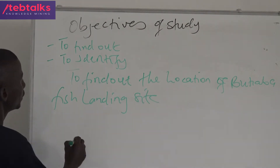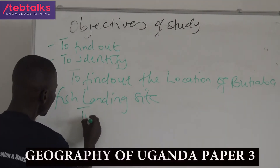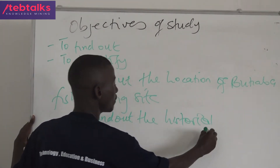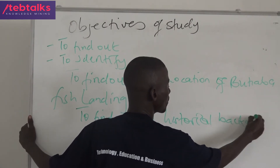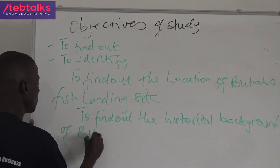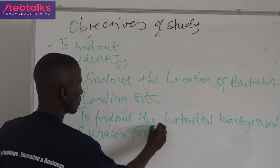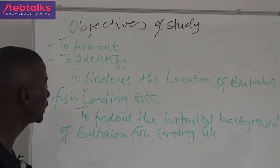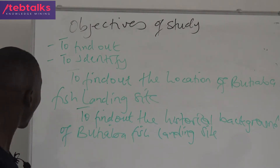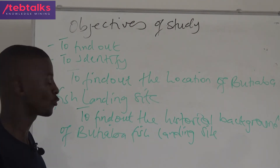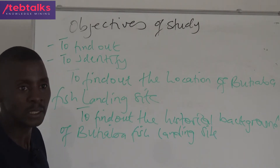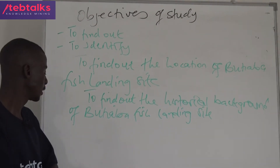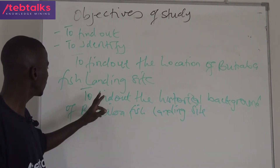The second objective is to find out the historical background. For example, you can find out the historical background of Hoima Central Market, find out the historical background of Bugabiti Estate, or find out the historical background of Kenya Sugar, depending on the topic of study. That is the second objective.